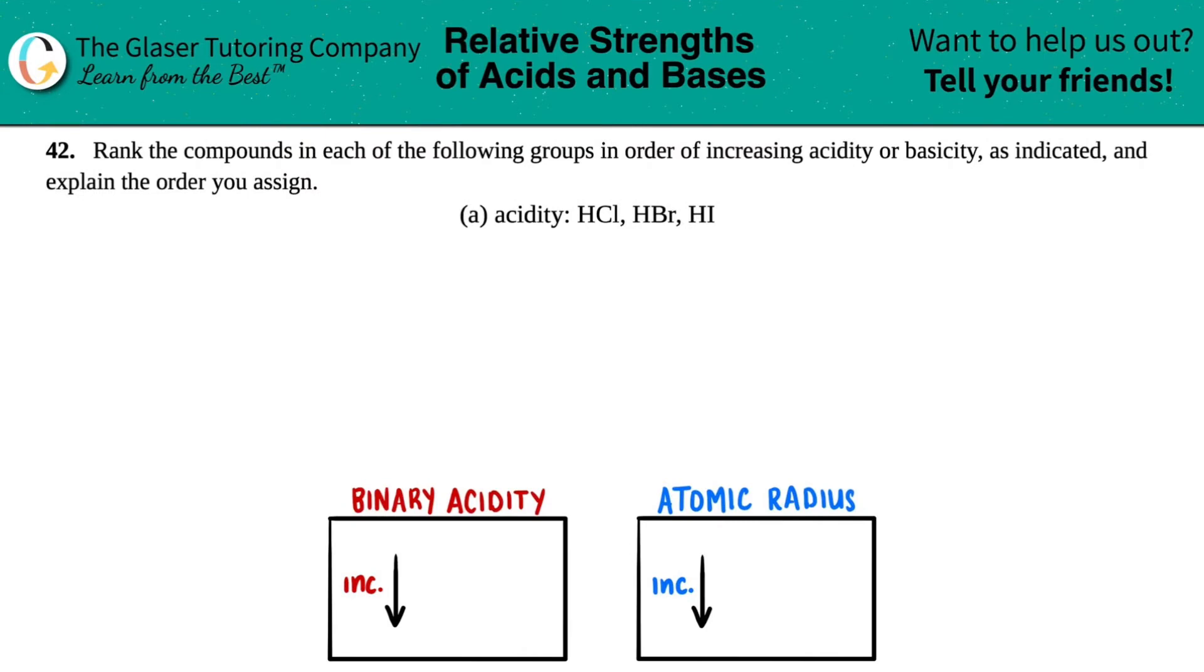Number 42: Rank the compounds in each of the following groups in order of increasing acidity or basicity as indicated and explain the order you assigned. Okay, so we have letter A. In this case we have to rank these compounds in terms of increasing acidity.